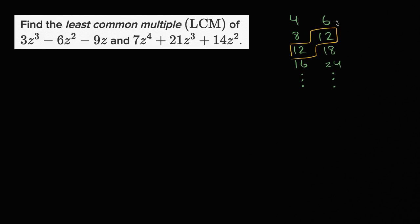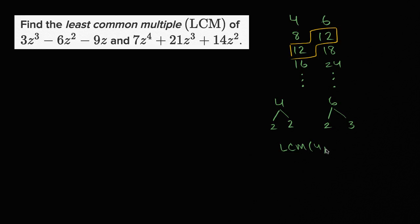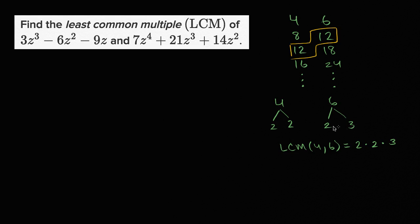Another way to think about it is to factor these numbers. We can view 4 as two times two from its prime factorization, and 6 is two times three. The LCM of 4 and 6 has to contain the factors of both. It needs two twos, and in order to be divisible by 6, we also need a three. We already have two twos, so we just add a three — giving us two times two times three, which is also 12.